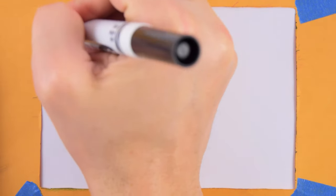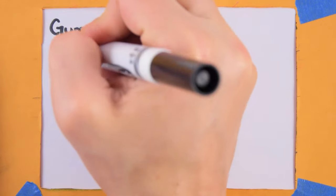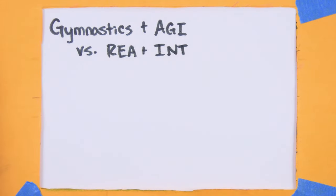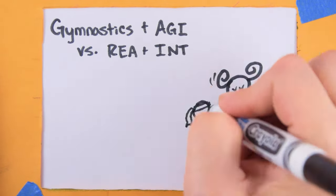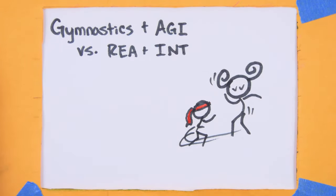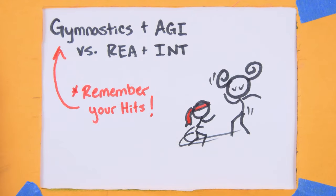To initiate a clinch, use a simple action to make a gymnastics plus agility test, opposed by your target's reaction plus intuition. If you score any net hits, you've engaged your target in a clinch. Take note of those net hits though, they're going to be important later in the combat.